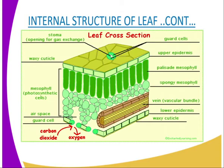We also have the upper epidermis, as you can see. We have the palisade mesophyll layer, and we have the spongy mesophyll layer. We have the veins, which are being represented by the vascular bundles. As you are aware, the vascular bundles comprise the xylem and the phloem. The function of the xylem is to transport water and mineral salts, while the function of the phloem is to transport manufactured food.